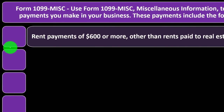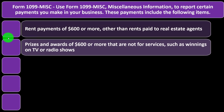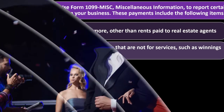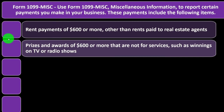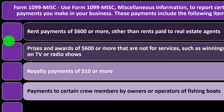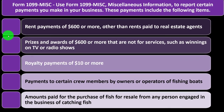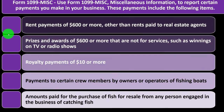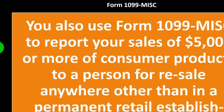Items reported on Form 1099 Miscellaneous include: rent payments of $600 or more other than rents paid to real estate agents; prizes and awards of $600 or more that are not for services, such as winnings on TV or radio shows; royalty payments of $10 or more; $10 payments to certain crew members by owners or operators of fishing boats; and amounts paid for the purchase of fish for resale from any person engaged in the business of catching fish. You also use Form 1099 Miscellaneous to report sales of $5,000 or more of consumer products to a person for resale anywhere other than in a permanent retail establishment.